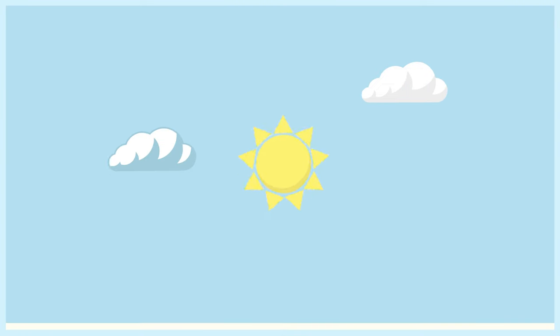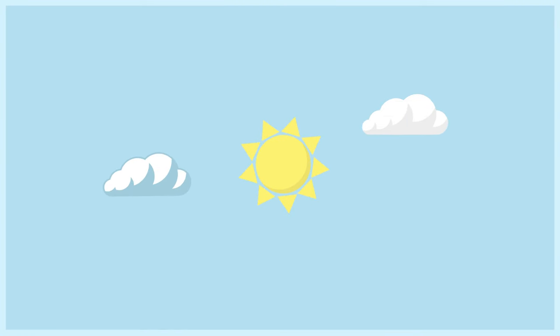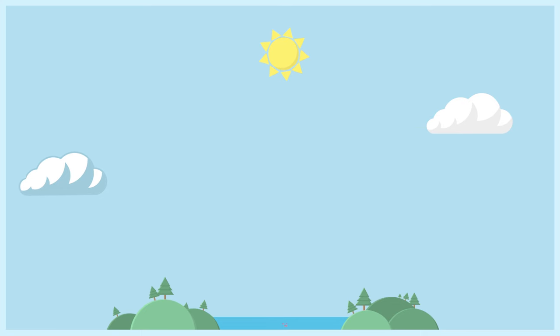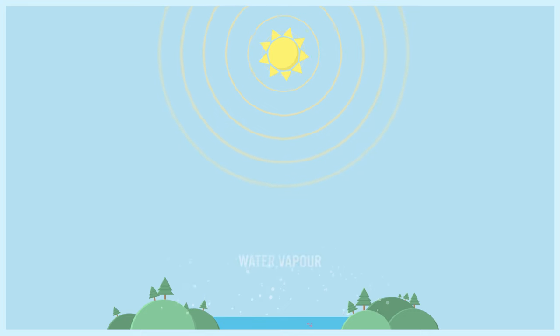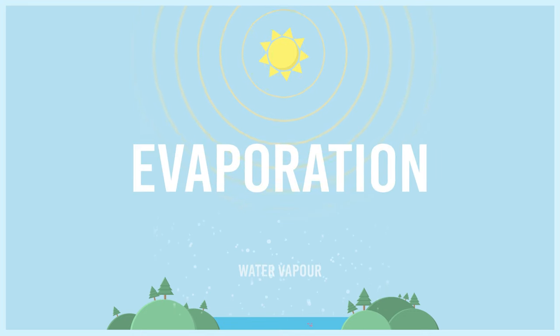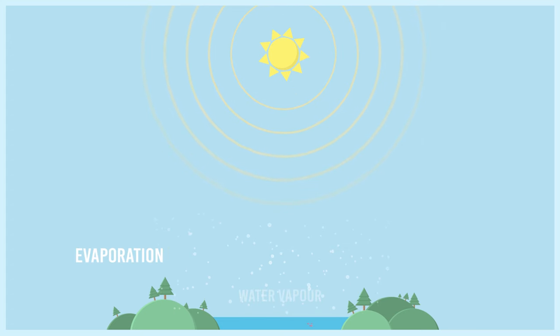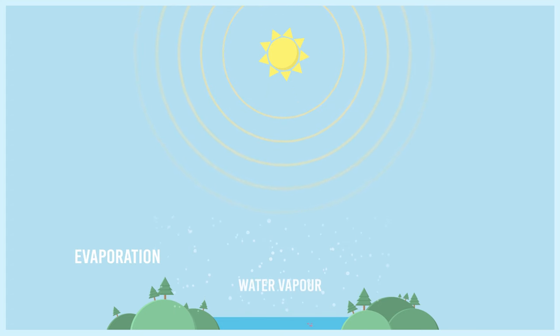The most common method of a cloud forming starts with the sun. When the sun heats water from oceans, rivers, lakes and other sources like soils and plants, some of it turns from liquid water into invisible gas called water vapour. This process is called evaporation. As gas is lighter than liquids, this causes the water vapour to rise up away from the surface.